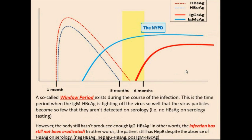A so-called window period exists during the course of the infection. This is the time period when the IgM against the core antigen is fighting off the virus so well that the virus particles become so few that they aren't detected on serology — there is no hepatitis B surface antigen on serology testing. However, the body still hasn't produced enough IgG against the surface antigen, so the infection has still not been eradicated. The patient still has hepatitis B infection despite the absence of surface antigen on serology. If you check the serology during the window period, you would not find surface antigen or E antigens, but you would find antibodies against the core antigen — either IgM or IgG — and that tells you this person is in the window period and still infected.